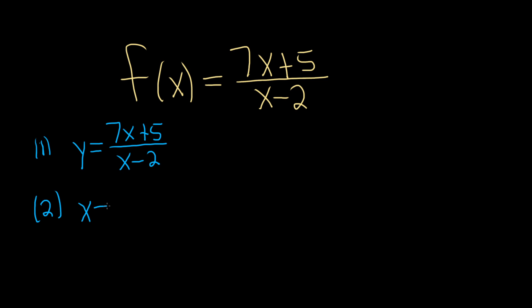So this is x equals 7y plus 5 over y minus 2.